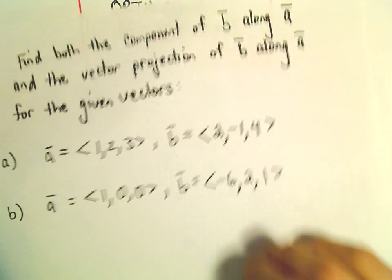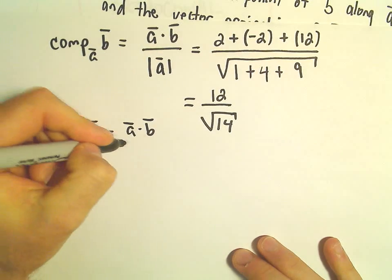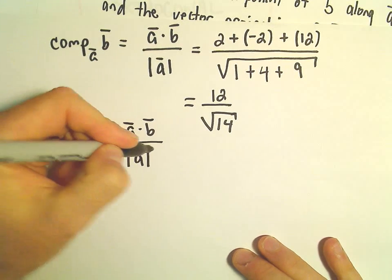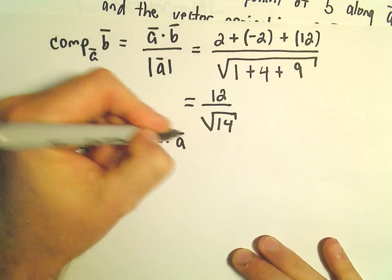Because we've already figured out the magnitude, and then we'll multiply that by vector A.